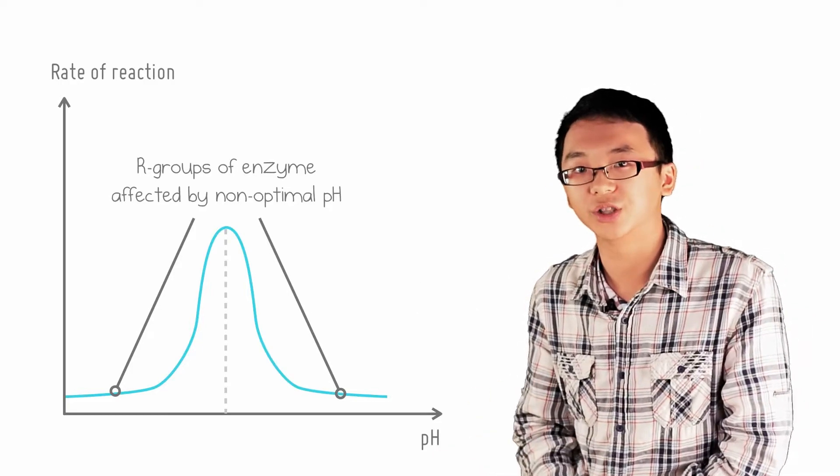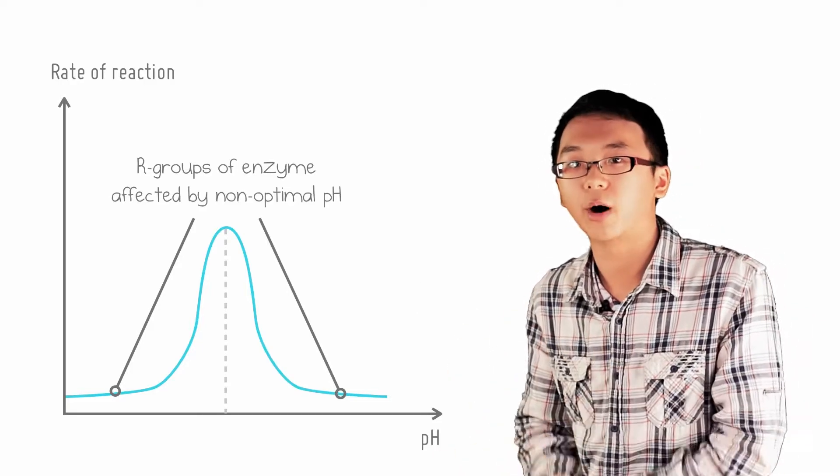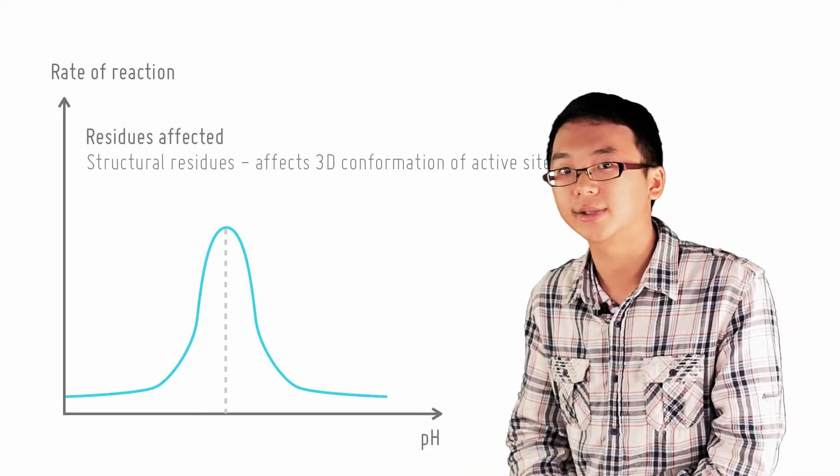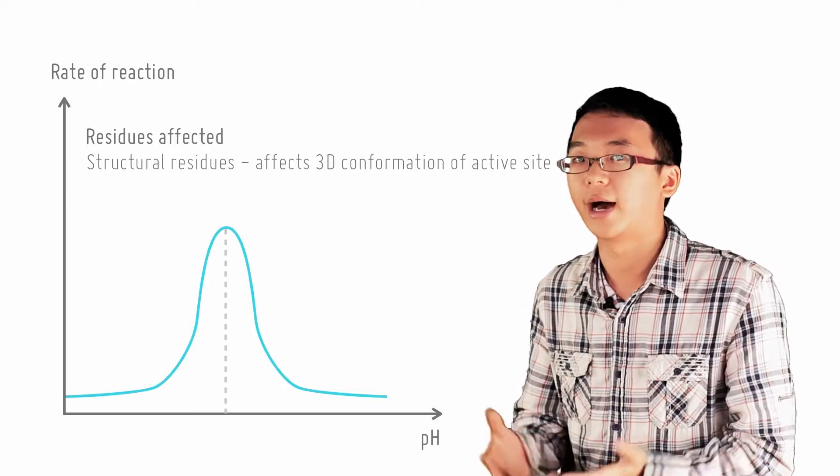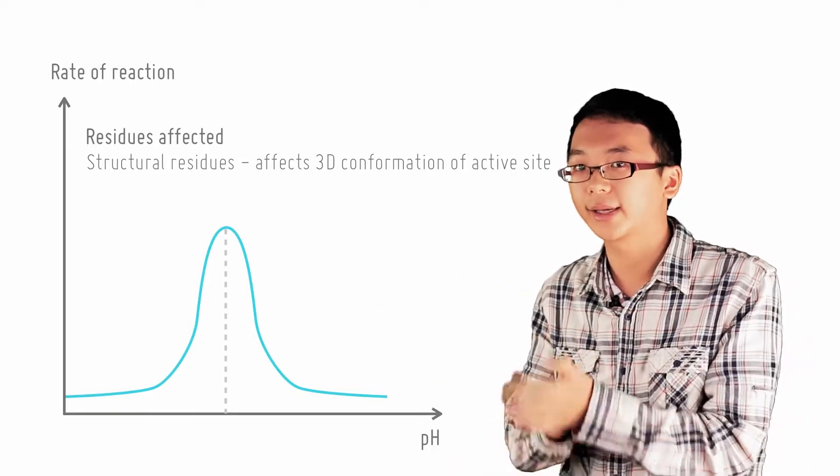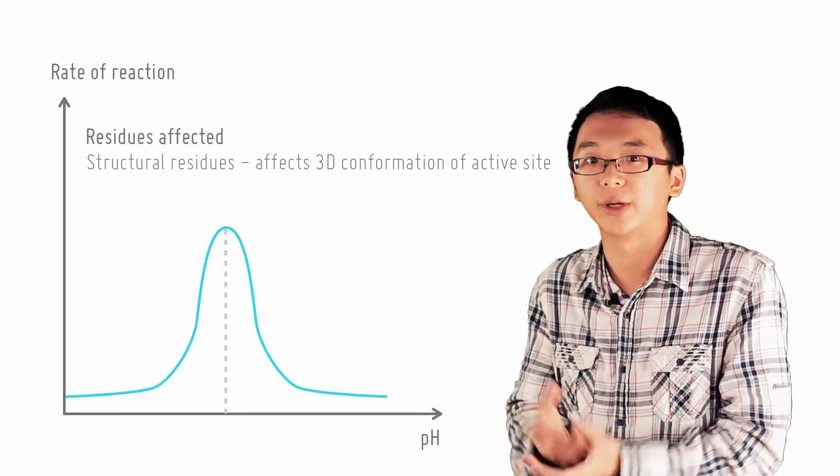The H+ or OH- ions form ionic bonds preferentially with the charged R-groups of structural residues and disrupt intramolecular ionic bonds, changing the active site's 3D conformation and making it no longer complementary to the substrate.